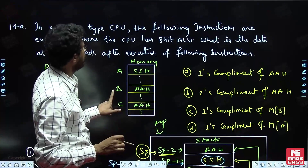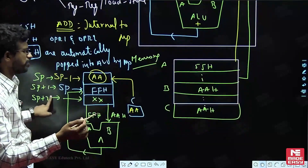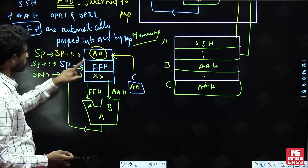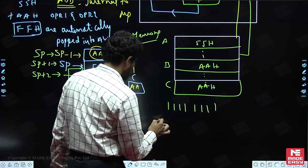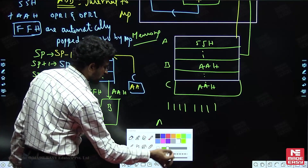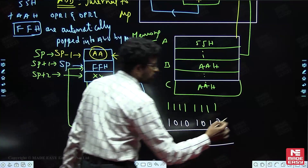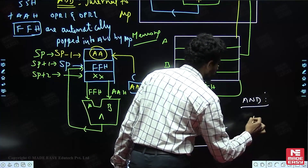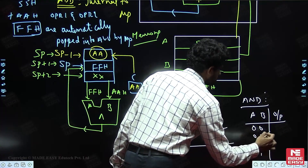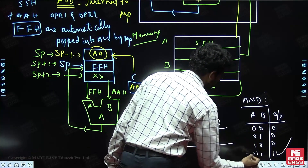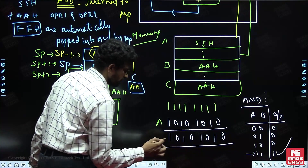The question asks: what is the data at the top of the stack after executing the instructions? Now perform AND of FF and AA. FF in binary is 11111111, and AA in binary is 10101010. AND logic: output is high only when all inputs are high; if one input is 0, output is 0. So the result is 10101010, which is AAH.